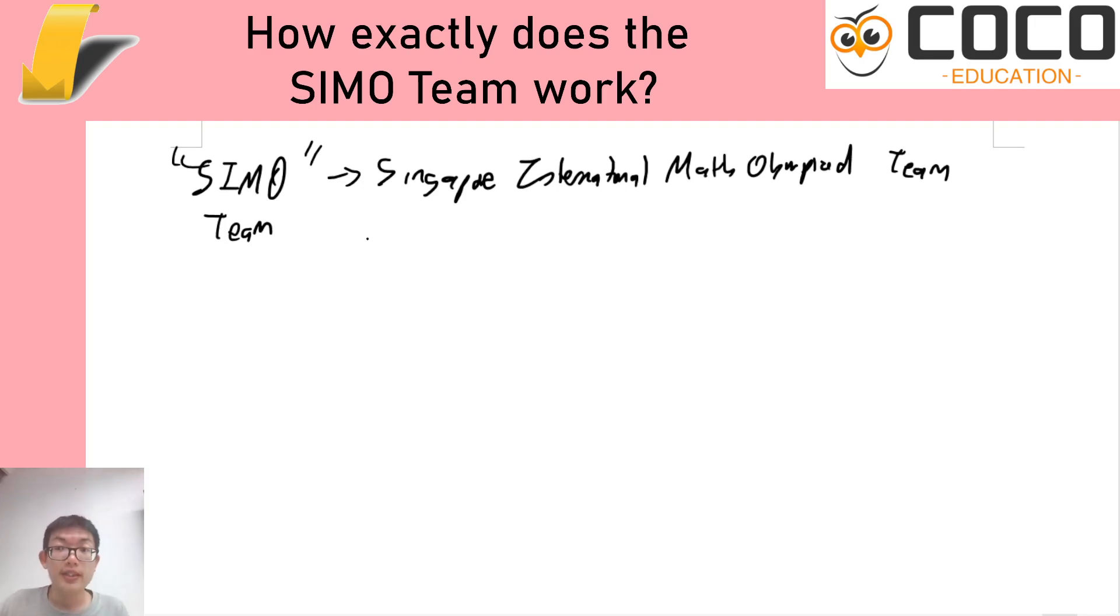You see, the SIMO team is split into the junior team, the senior team, and not the open team but the national team, which is sort of similar to a lot of other countries' training setup at a national level where there are a few different categories. It's just that the names of our teams are kind of conveniently named. Let me explain how do you get into them.